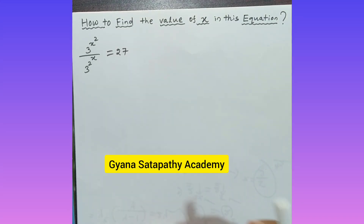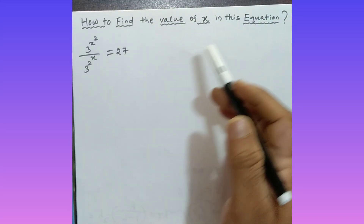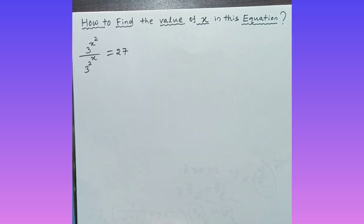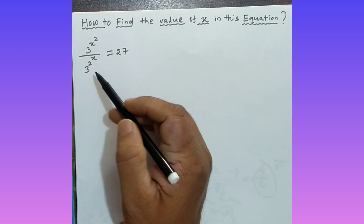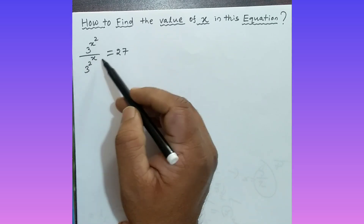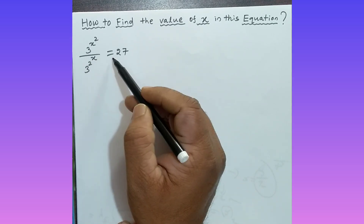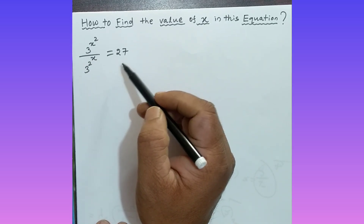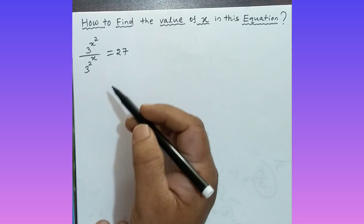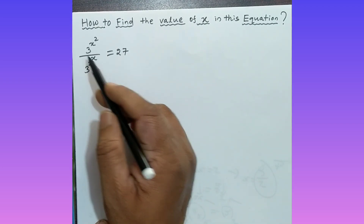Hello students, welcome to my YouTube channel. In today's video we are going to discuss how to find the value of x in this equation. Look at the question: 3 to the power x squared, divided by 3 to the power 2x, is equal to 27. How can you find the value of x?